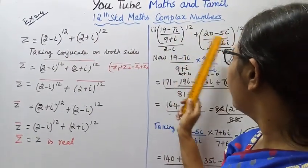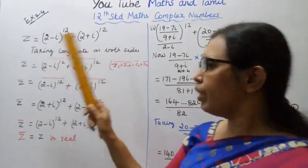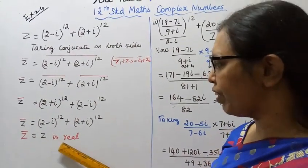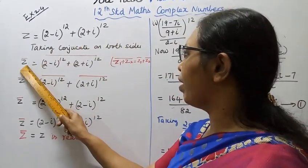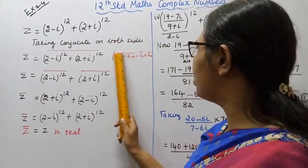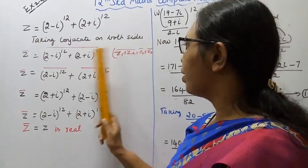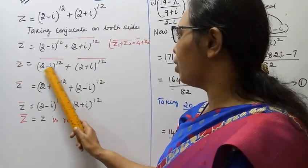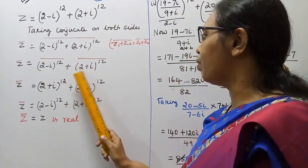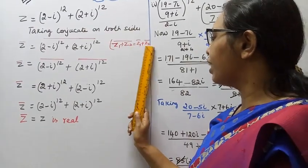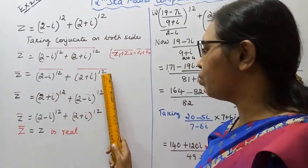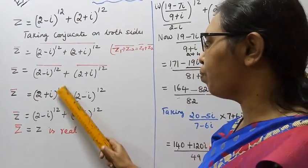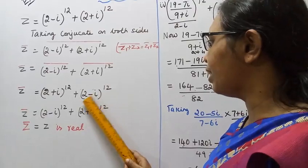Now back to the second sub-division. Taking conjugate on both sides of z = (2 + i)^12 + (2 − i)^12: z̄ = conjugate of [(2 + i)^12 + (2 − i)^12]. Using the property that the conjugate of (z₁ + z₂) = z̄₁ + z̄₂, we get z̄ = (2 − i)^12 + (2 + i)^12, which equals the original z. Therefore z̄ = z, so z is real.